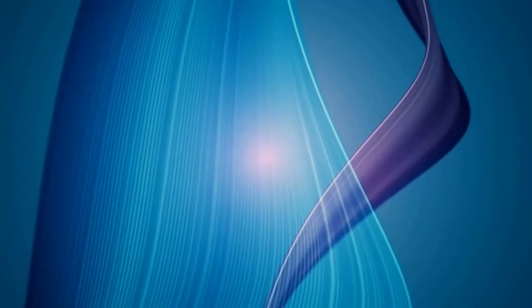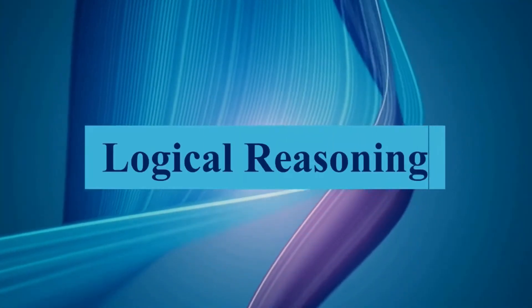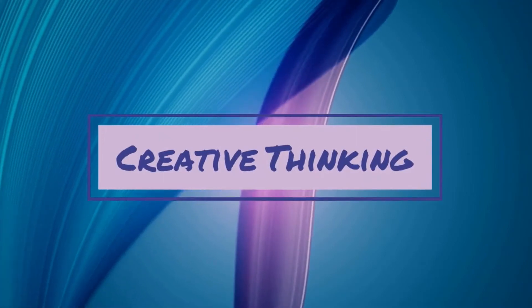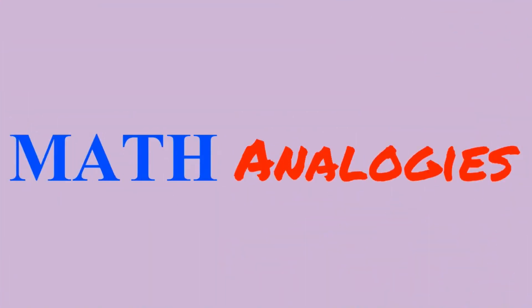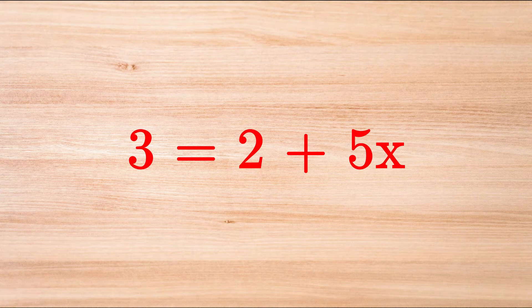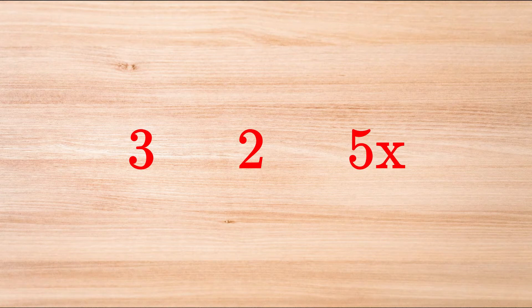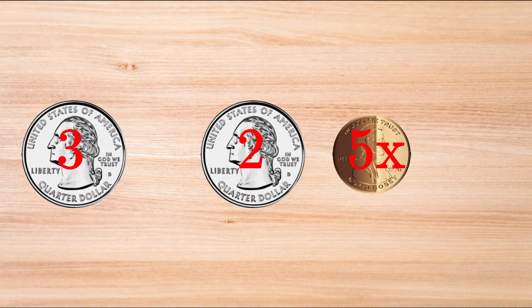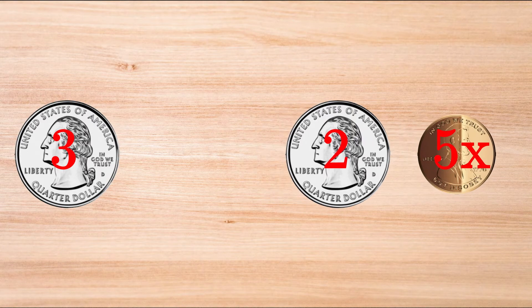Here we go! The equation 3 equals 2 plus 5x. We want to view the 3, the 2, and the 5x as coins on a desk, but with 3 on the left-hand side and both 2 and 5x on the right-hand side.